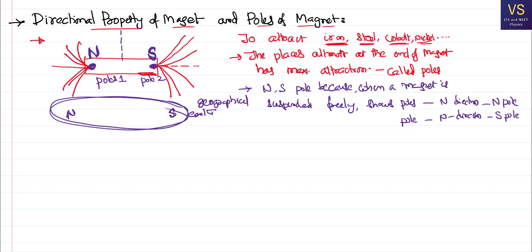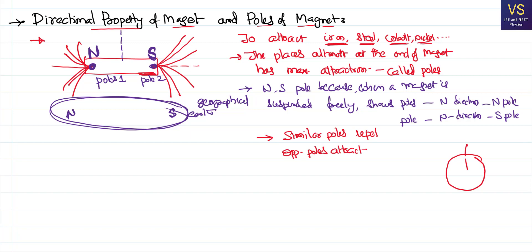The next question is: why do they show north and south directions? For that, we need to tell you one property of the magnet — that similar poles repel each other, and opposite poles of the magnet attract each other. This is the property of the poles of the magnet. To understand how this links to the magnet showing north and south directions, we shall draw the diagram of the earth.